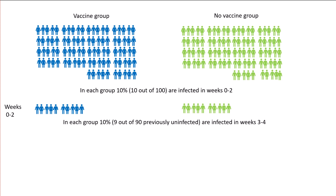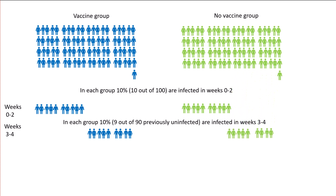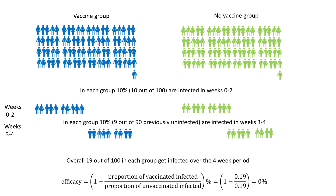In each group, 10% — that's 9 out of the 90 previously uninfected — are going to be infected in weeks three to four. So 9 out of the remaining 90 in the vaccine group get infected, and 9 out of the remaining 90 in the no-vaccine group get infected. Overall, 19 out of 100 in each group get infected over the four-week period, and efficacy — defined as one minus the proportion of vaccinated infected over the proportion of unvaccinated infected, as a percentage — is just 0%.